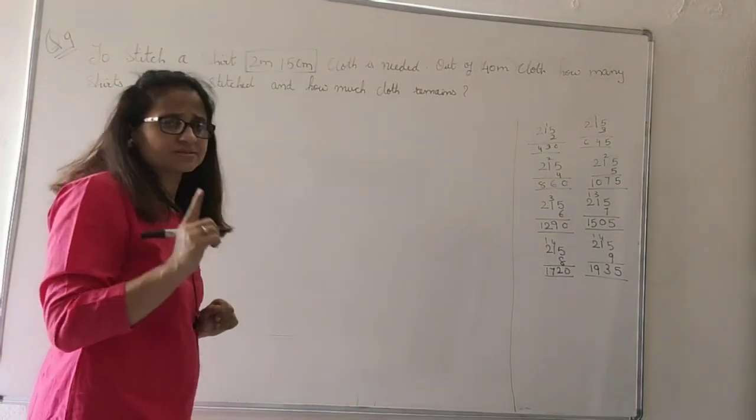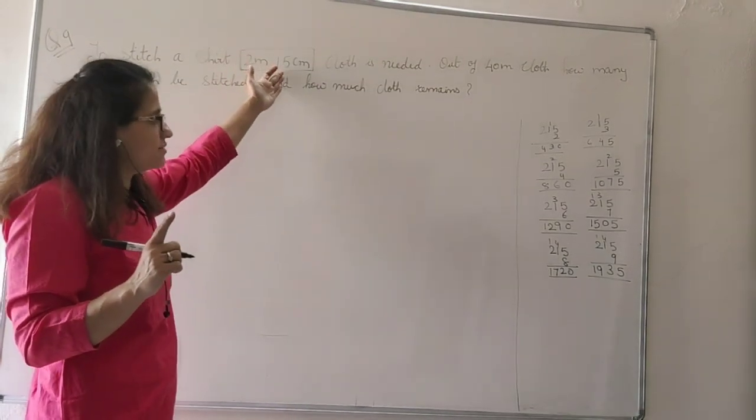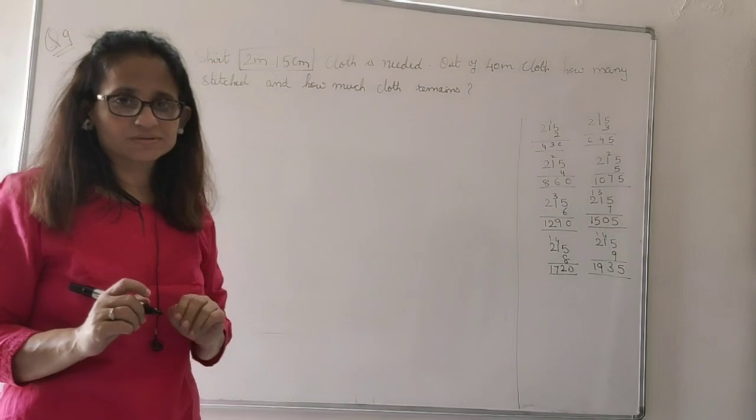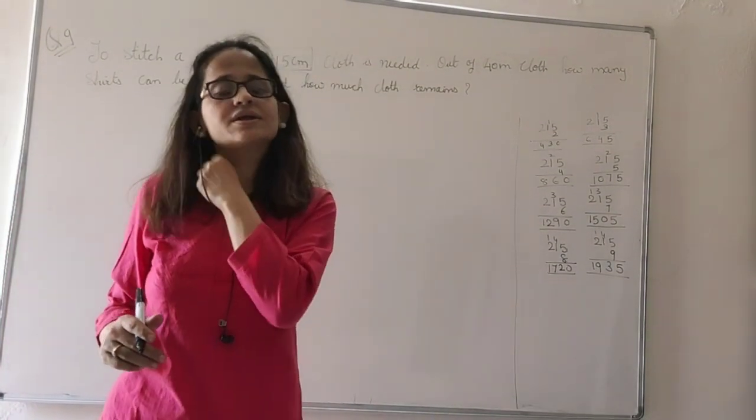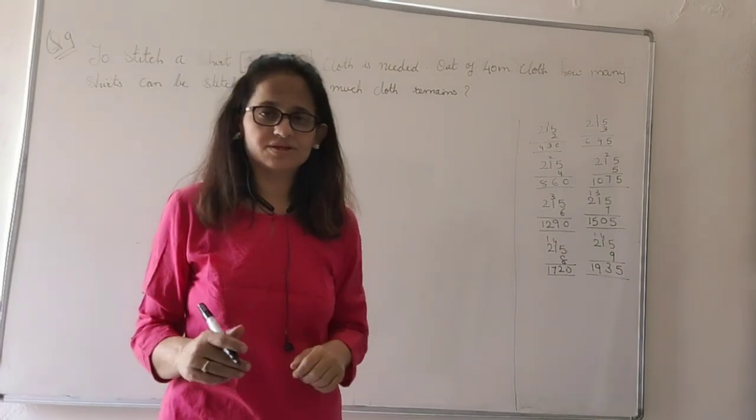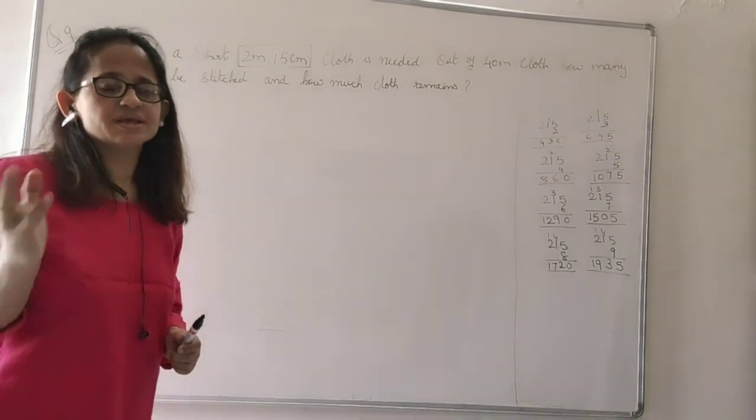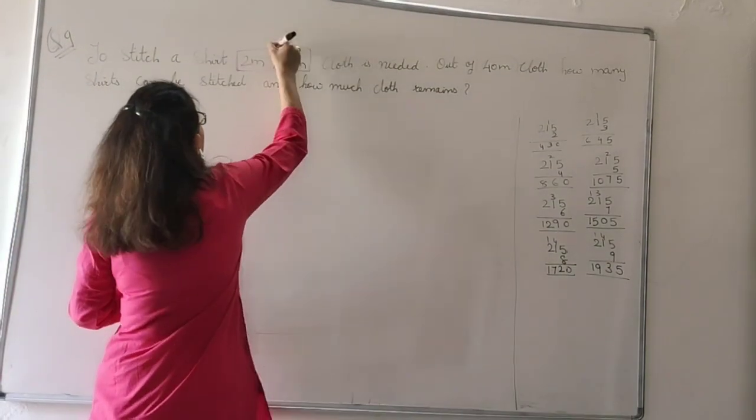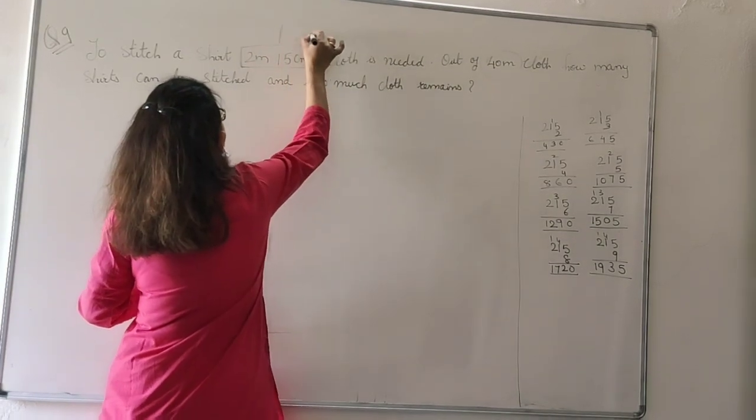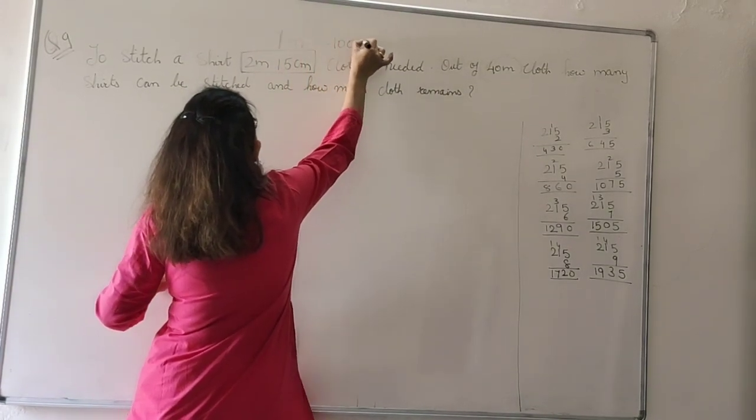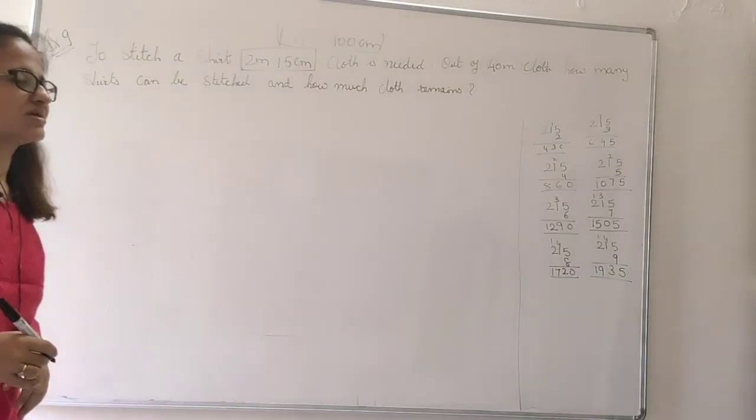But here, the first thing is, some quantities are in meters, some are in centimeters. This is not done. Either every quantity should be in meters or every quantity should be in centimeters. Now we all know the relation between meters and centimeters. One meter is equal to 100 centimeters.